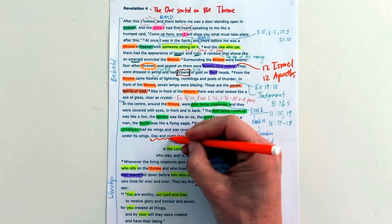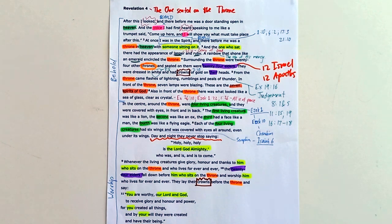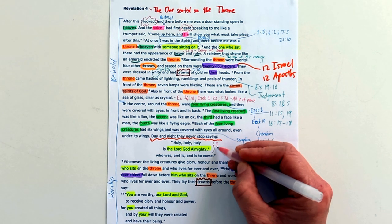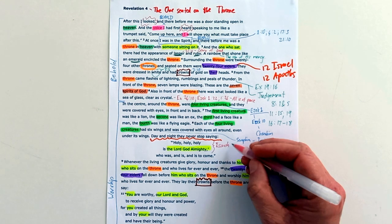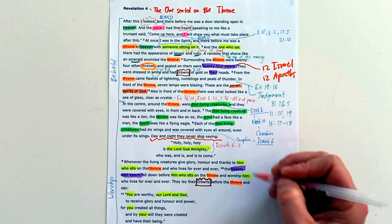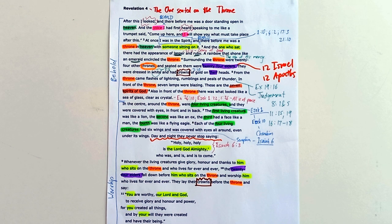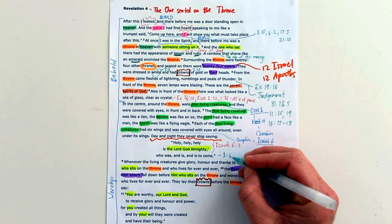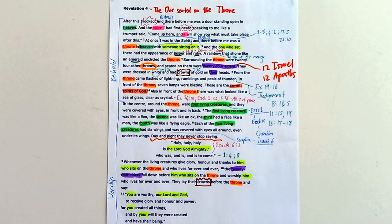Not only is all heaven worshiping — as we continue in Revelation, eventually we'll see all creation, everything, worshiping this one on the throne. Day and night these heavenly beings in the presence of God, encircling the throne, never stop saying: holy, holy, holy is the Lord God Almighty. That is a direct quote from what the seraphim say about God in Isaiah 6, when Isaiah had a vision into the throne room of heaven. We've also seen this description of God before in chapter 1 verses 4 and 8 — he who was and who is and who is to come. He is the Lord God Almighty, God the Father, and he's on the throne.